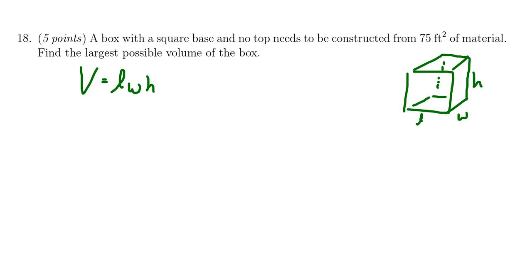So we want to find the largest possible volume of this box. How does the constraint come into play here? The constraint has to do with this 75 square feet of material. Some other things to mention: it says it has no top, so it turns out this box only has five sides. We can ignore the top.